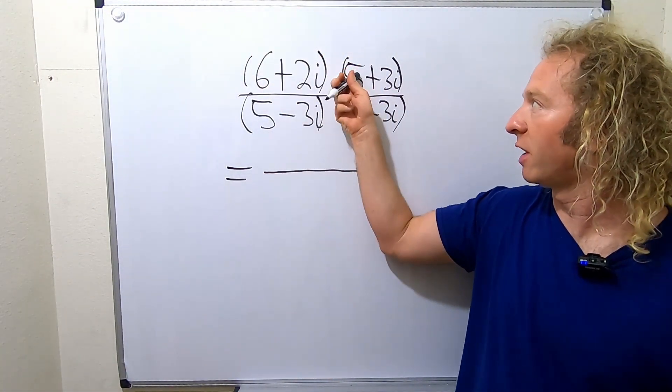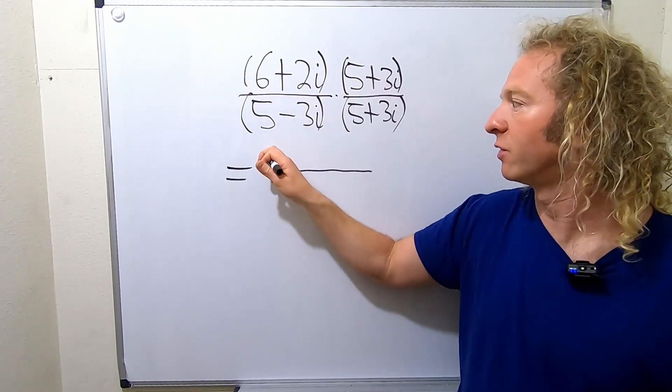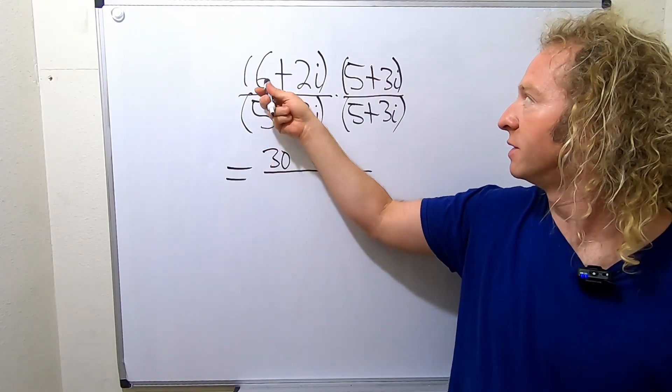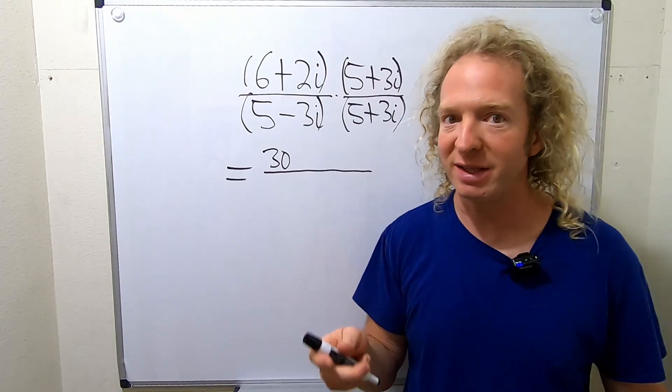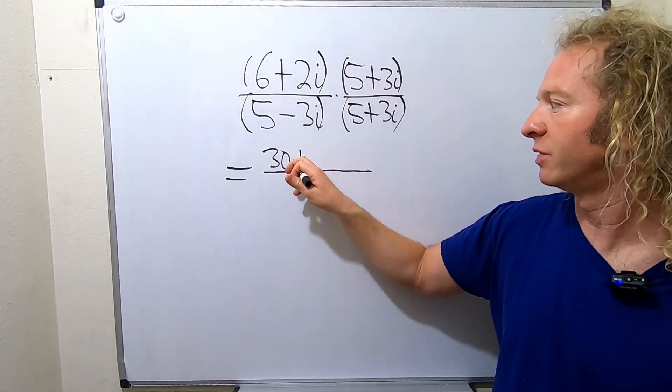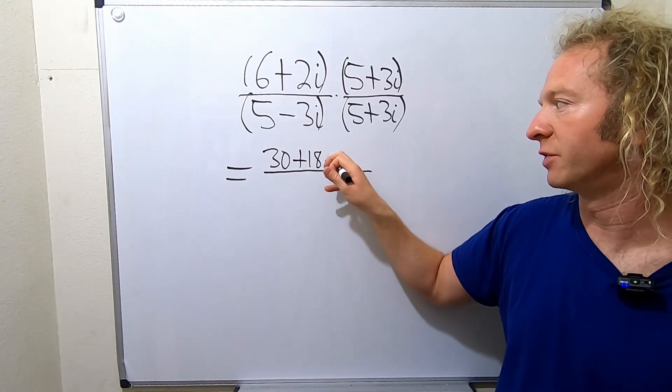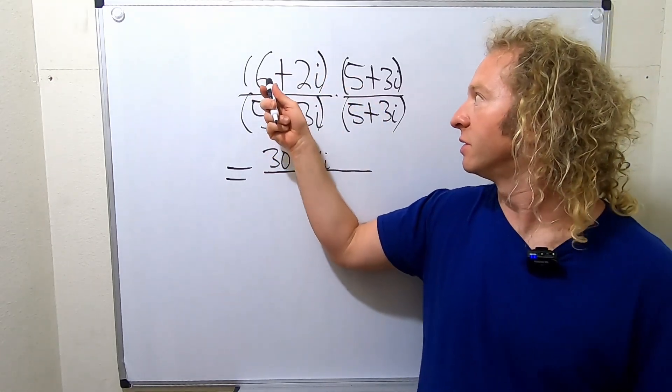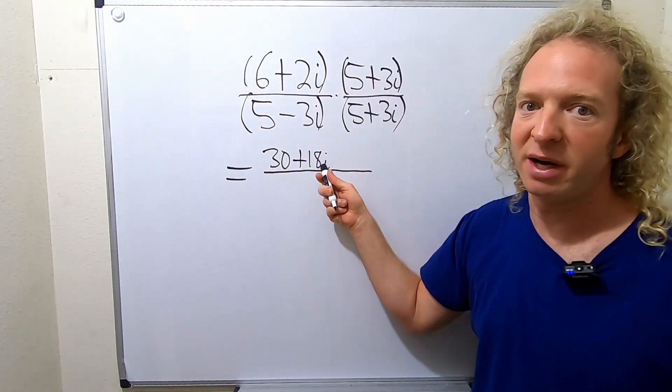So we do 6 times 5. 6 times 5, that gives us 30. And then 6 times 3i, that's 18i, so plus 18i. Beautiful stuff. So 6 times 5 is 30, 6 times 3i is 18i.